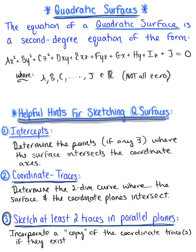So finding the intercepts, determining your coordinate traces, and incorporating at least two traces in parallel planes, when applicable, are three ways to help simplify sketching quadratic surfaces and surfaces in three dimensions in general.